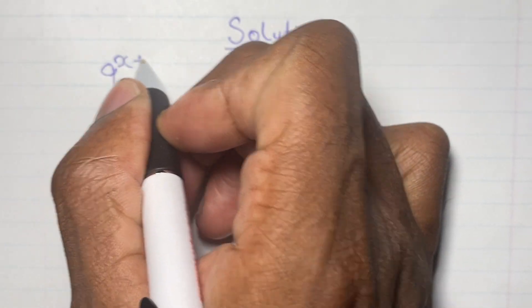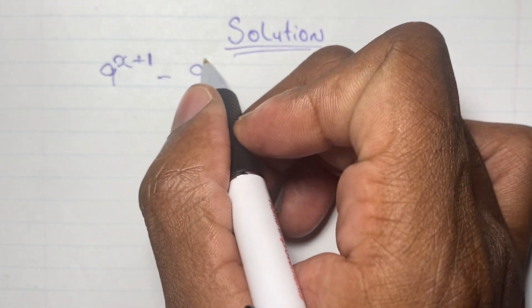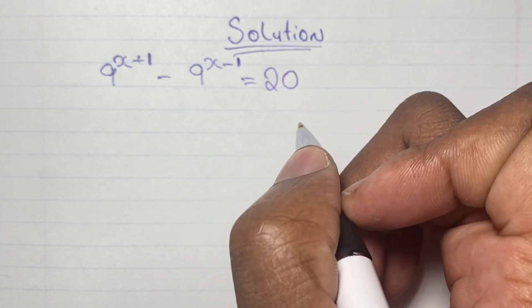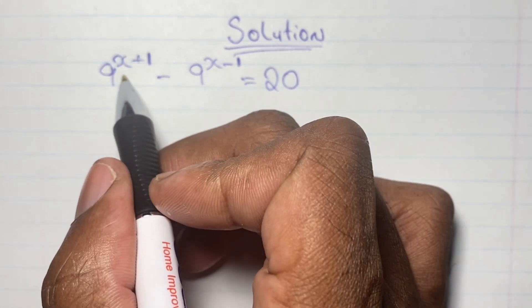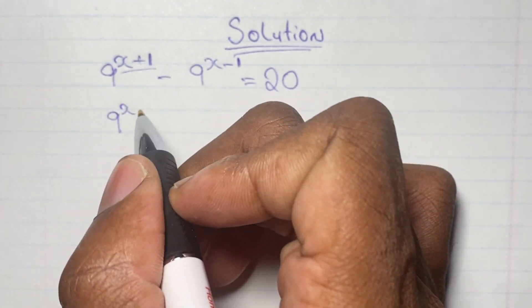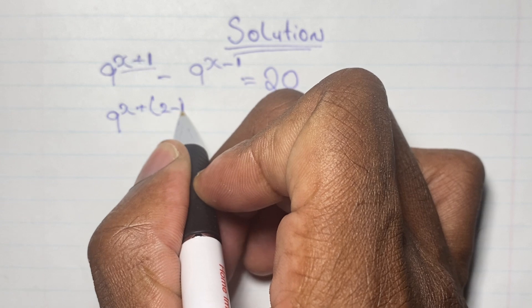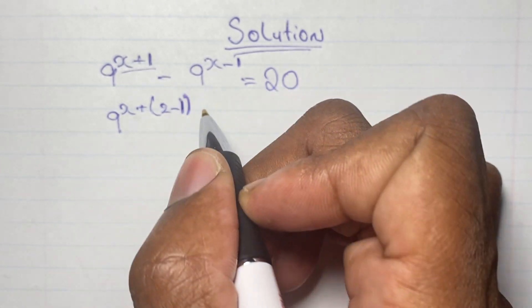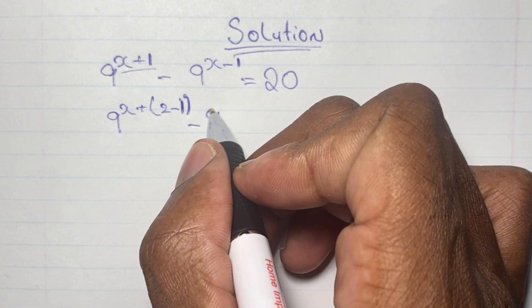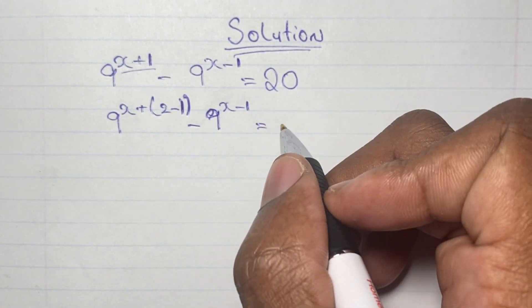Our equation is 9 to the power of x plus 1, minus 9 to the power of x minus 1, is equal to 20, and we are going to find the value of x.